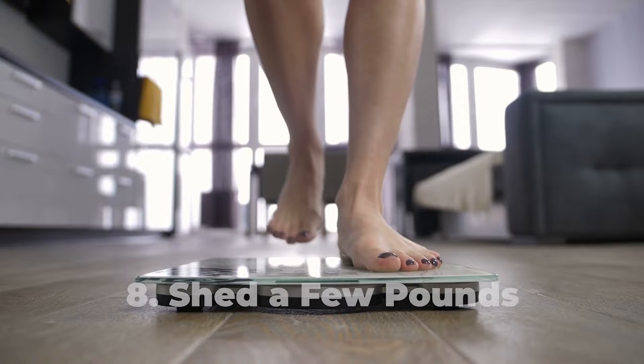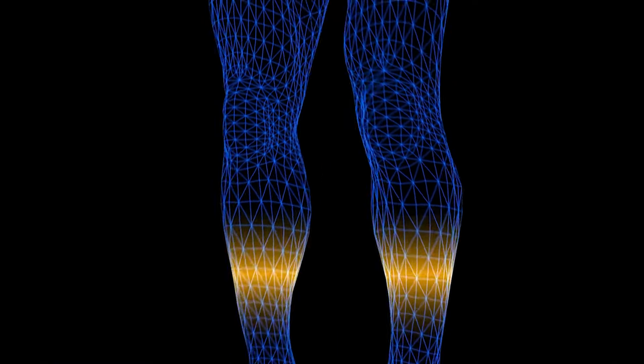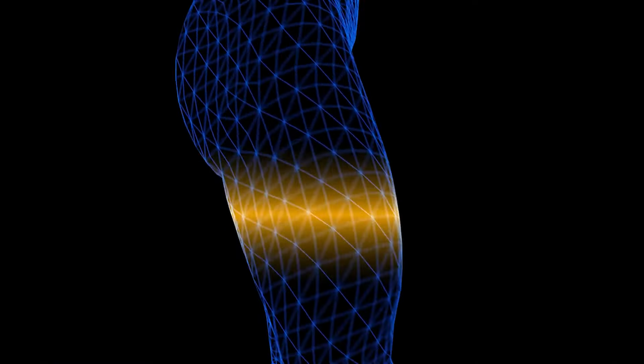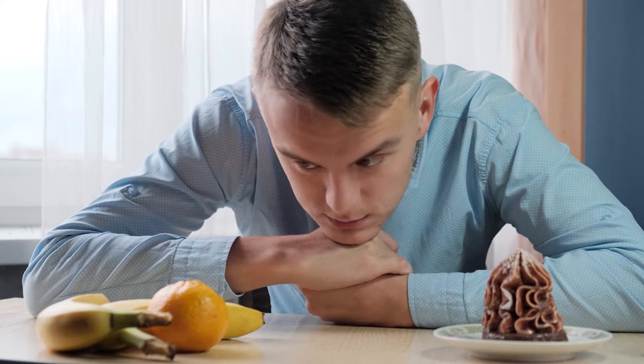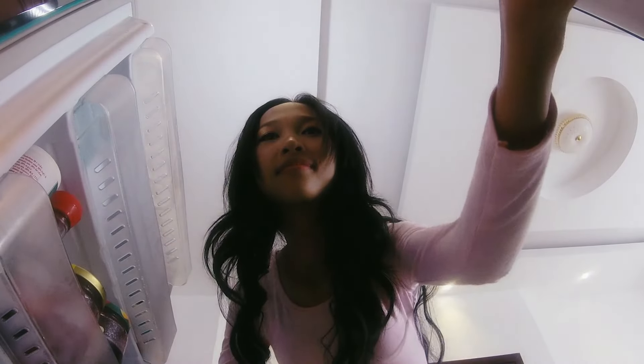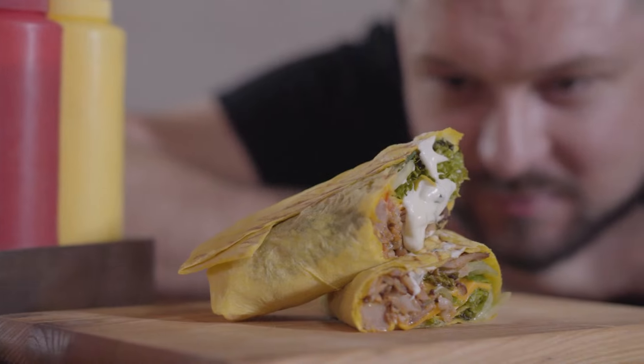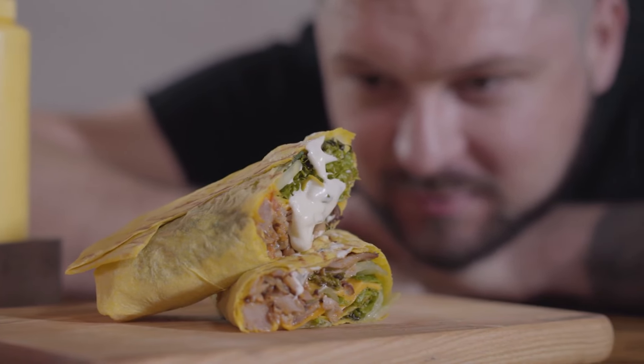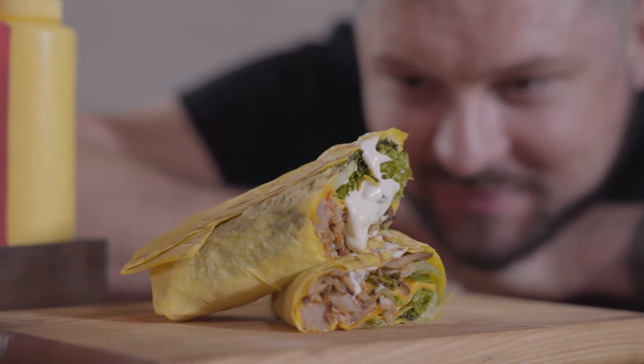Number eight: Shed a Few Pounds. A dehydrated body sends and receives confused signals. Dehydration can cause feelings of hunger even just after a meal, or a lack of adequate fluids can lead to cravings for sugar. When the body is receiving enough fluids, those hunger pangs subside, and so does the desire for sweets.